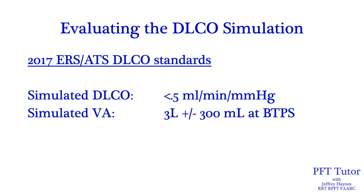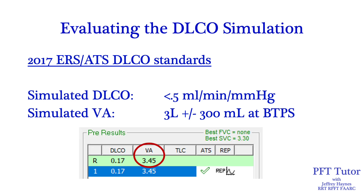So how do you know if your results are acceptable? The 2017 ERS ATS DLCO standards say that the simulated DLCO should be less than 0.5 mL per minute per mmHg, and the simulated alveolar volume should be 3 liters plus or minus 300 mL under BTPS conditions. Going back to our simulation example, the simulated DLCO is acceptable, but the simulated alveolar volume of 3.45 liters is outside the acceptable range of 3 liters plus or minus 300 mL.